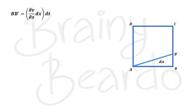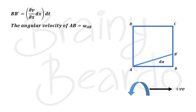Whenever an object rotates, we must define angular velocity. We use the convention that anticlockwise rotation is positive and clockwise rotation is negative. The angular velocity of side AB, called ω_AB, is in the anticlockwise direction, so we write ω_AB = dα/dt, by the definition of angular velocity.